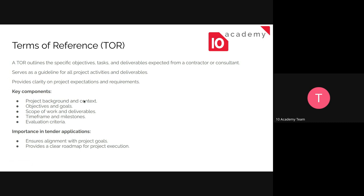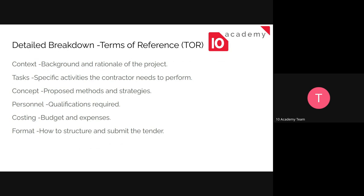The key components are: project background and context — this is just the introduction part — objectives and goals, scope of work and what's expected from us to deliver, time frame which is the time frame expected for us to finish in, and evaluation criteria. They're going to use these evaluation criteria in order to award us. It's important for tender application just to ensure alignment with project goals, and it provides a clear roadmap for project execution — good for both the tender and the consultant, showing what to do, when to do it, and how to evaluate it.